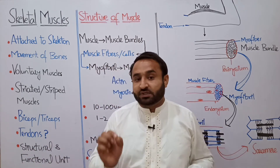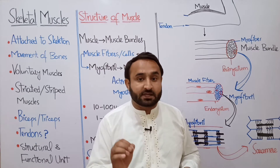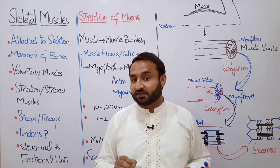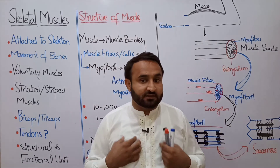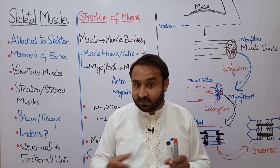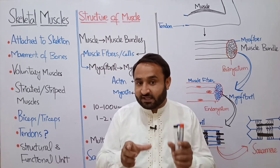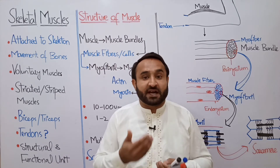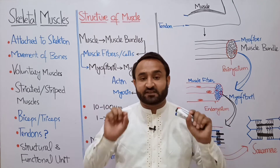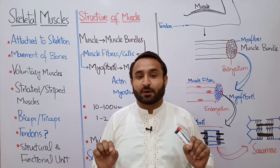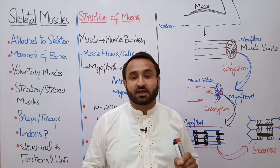The structural and functional unit of muscle is the muscle fiber, which can also be called the muscle cell. We know that the structural and functional unit of a living organism is a cell. This muscle fiber is also a cell — a muscle cell. But we call it muscle fiber because it is elongated and cylindrical. So we must remember that muscle fibers are basically muscle cells.